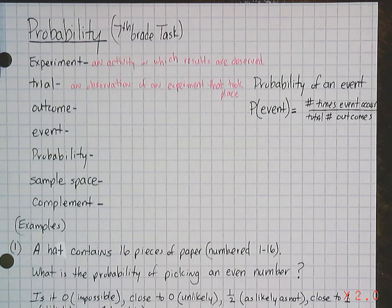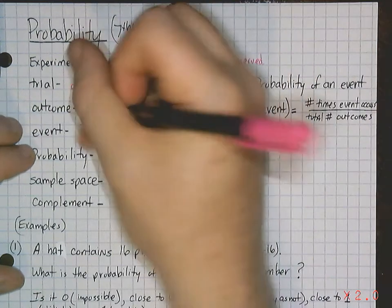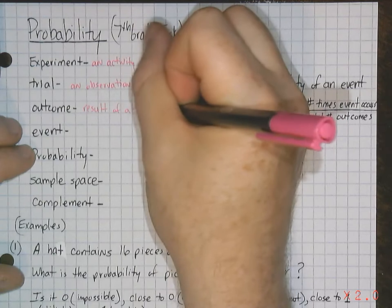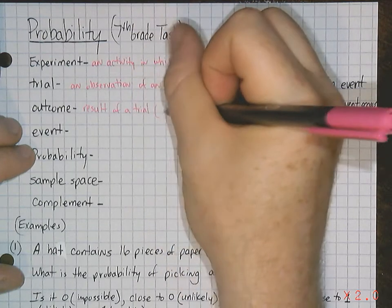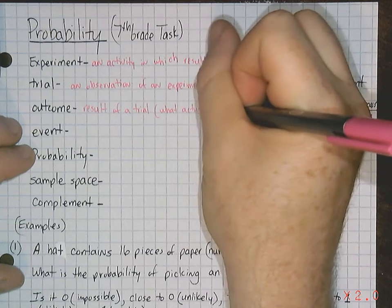Outcome. Outcome is what happens. It's the result. It's the result of a trial. Basically, what actually happens.